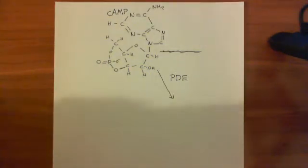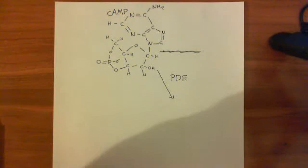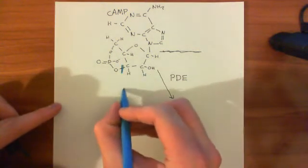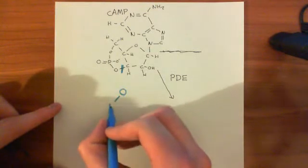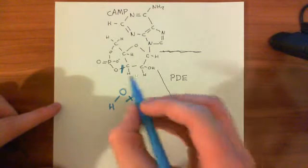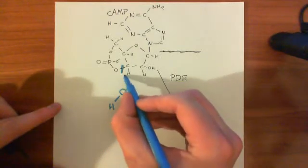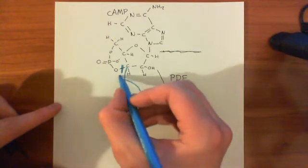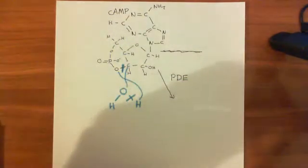The way in which they break it down is they break up this bond here, basically, using water. So what they do is they take a water molecule here, and they split the water molecule into two. They take the hydroxyl group and bind it to this carbon here, and they take this hydrogen here and bind it to the oxygen of the phosphate group there.